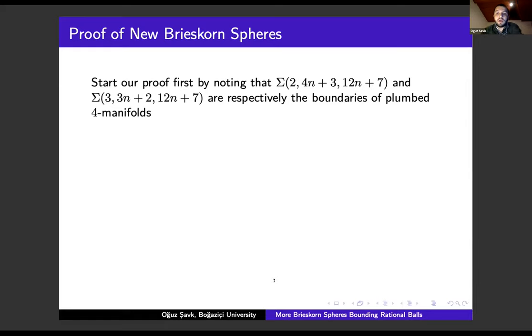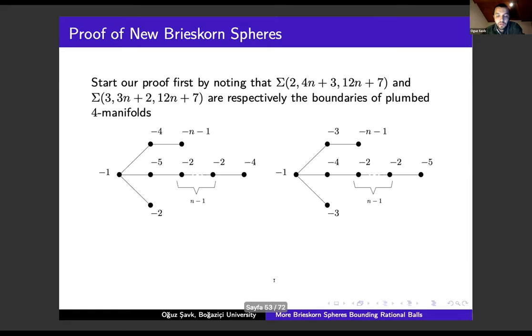We are ready to present our proof. Our Brieskorn spheres are respectively the boundary of plumbed manifolds. These are the plumbing diagrams. They can be found easily by solving Diophantine equations. It is technical—I skip this. For this, you may check the first chapter of Saveliev's book, which is called Invariants of Homology Three-Spheres.